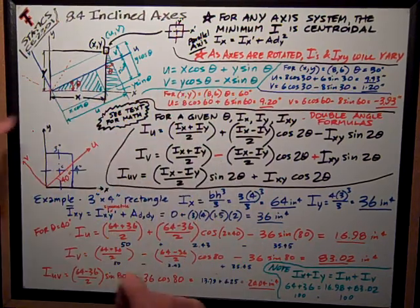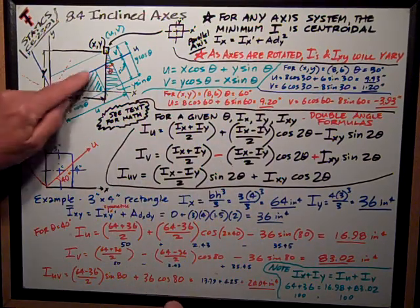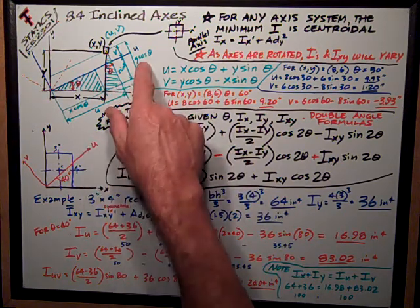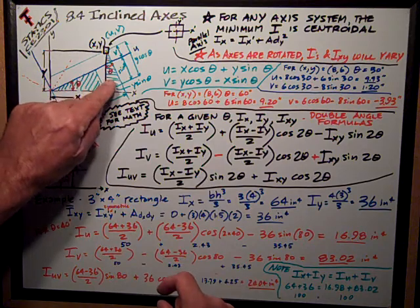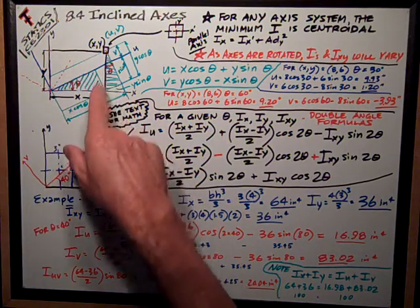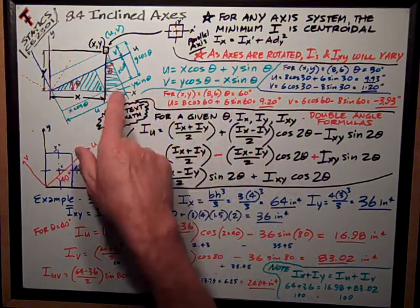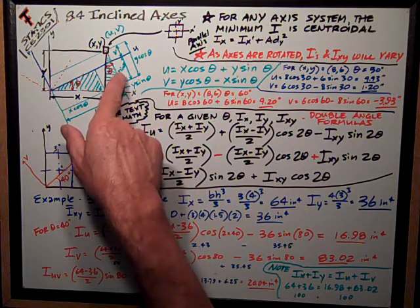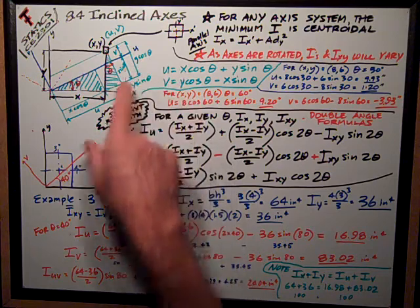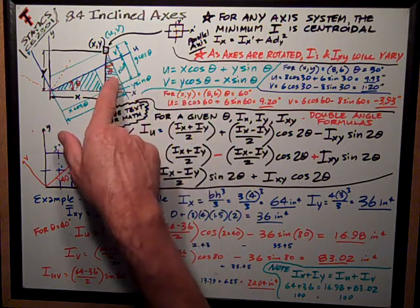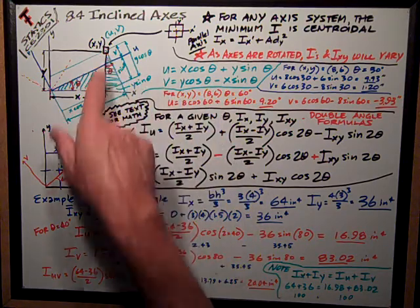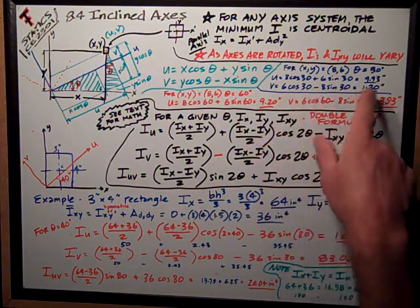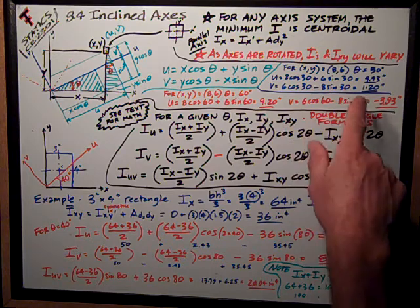V, the dimension v, right here, is y cosine of theta, this adjacent leg of this little triangle here, minus x sine theta, which is, my writing is small, but that's that dimension there, so v is y cosine theta, minus x sine of theta. So I can try that out, works for any angle of rotation.